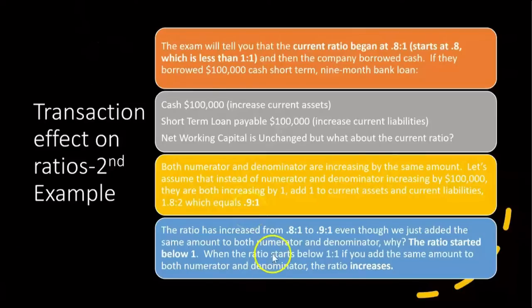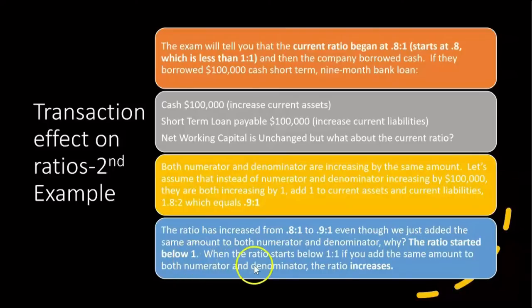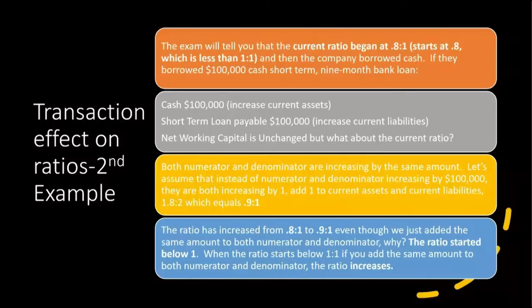The current ratio increased from 0.8 to 1 to 0.9 to 1 even though we added the same amount to both numerator and denominator — because the ratio started below one to one. When the ratio starts below one to one, adding the same amount to both numerator and denominator always increases the ratio. This applies to any ratio — current ratio, quick ratio, cash ratio. We also know that if the ratio started above one to one and the same amount was added to both sides, the ratio would decrease.